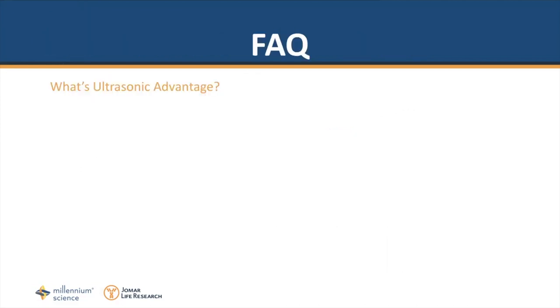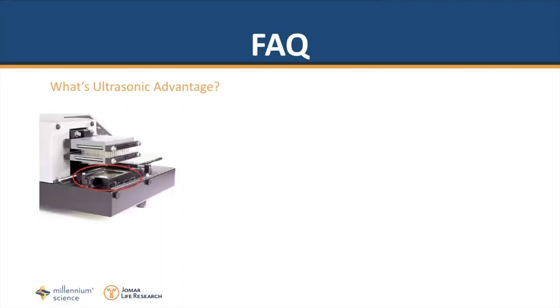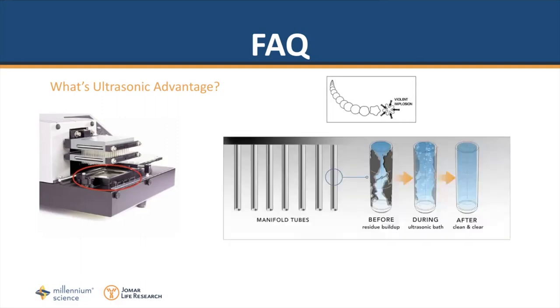Now some frequently asked questions. What is ultrasonic advantage? The ultrasonic advantage is the in-built cleaning system in the biotech plate washers. When the manifold tubes are in the metal reservoir, ultrasonic energy creates the repeated and violent implosion of bubbles within the cleaning liquid and this in turn removes any stubborn buildup of salts and protein.